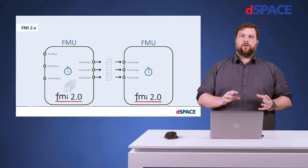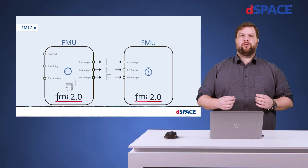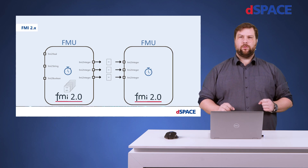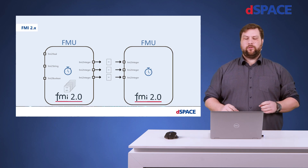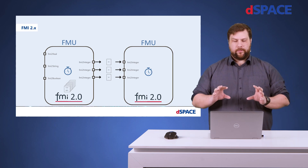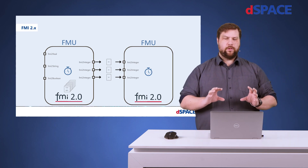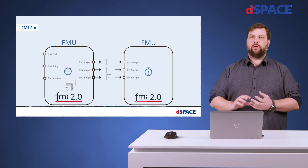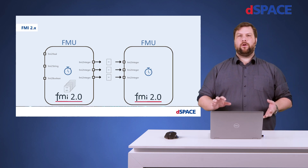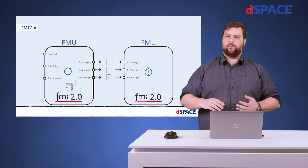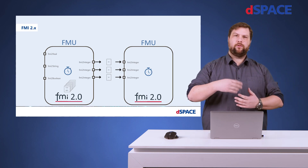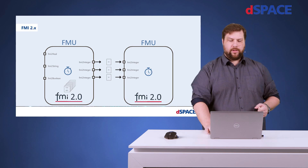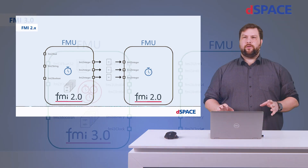It becomes worse when you want to exchange binary data. Also, the FMU so far provides only one clock, so there's only one rate at which you can execute the FMU. With FMI 3, everything is a bit different.